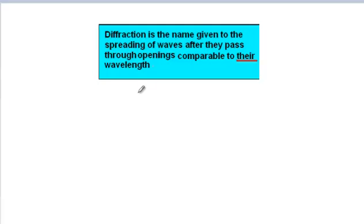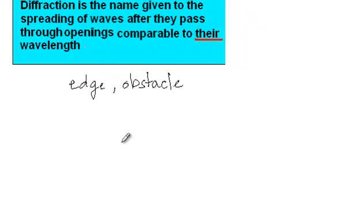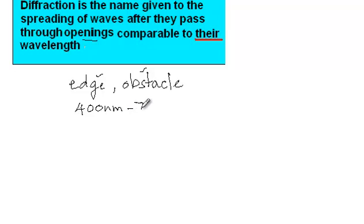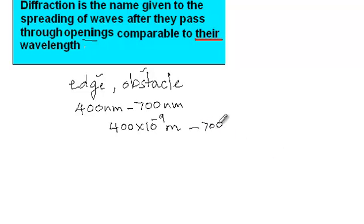Light also gets diffracted when it passes around an edge or an obstacle placed in its path. Diffraction can take place either when light passes through an opening of size comparable to its wavelength, or when it passes around an edge or obstacle. The wavelength of visible light is around 400 to 700 nanometers, meaning the aperture size must be in the range of 400×10⁻⁹ to 700×10⁻⁹ meters.